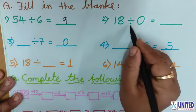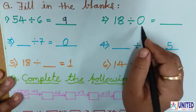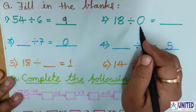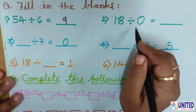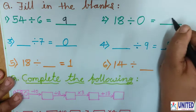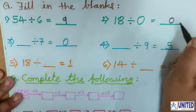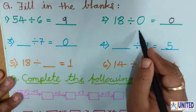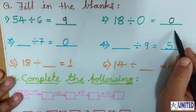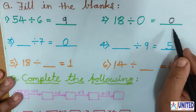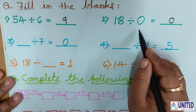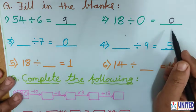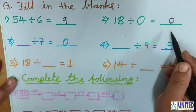Now number 2: 18 divided by 0. Now, the divisor is 0. If the divisor is 0, at that time your answer is to be 0. If we divide any number by 0, the answer always comes 0. That you have to remember.